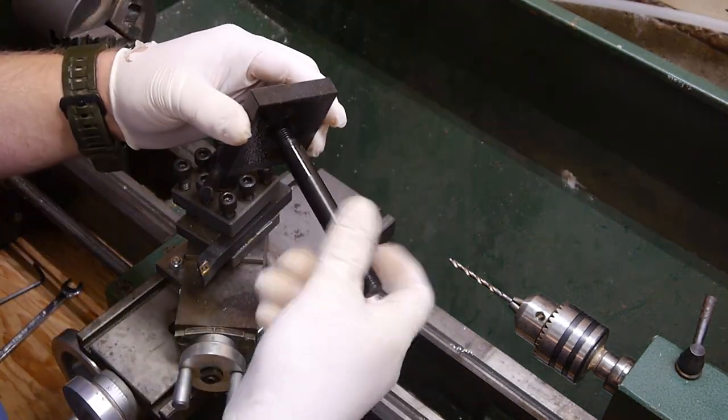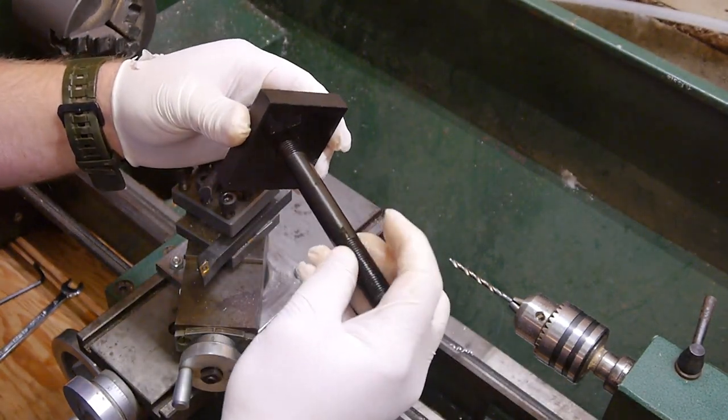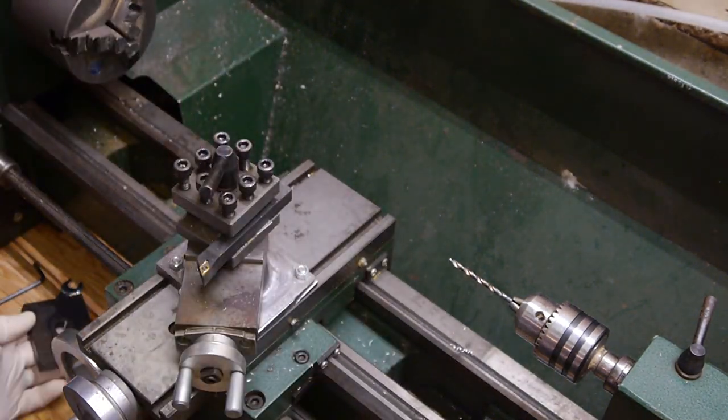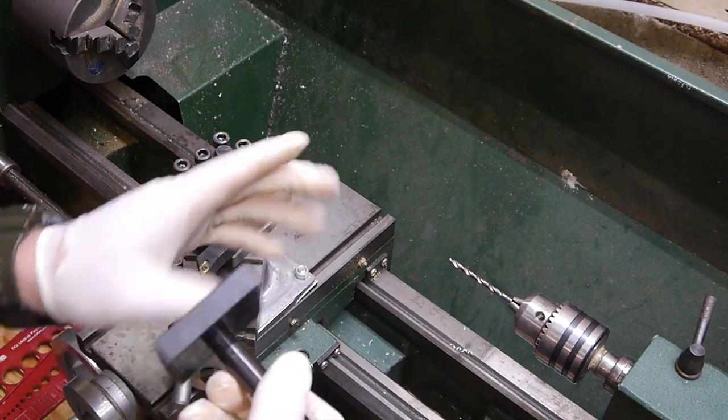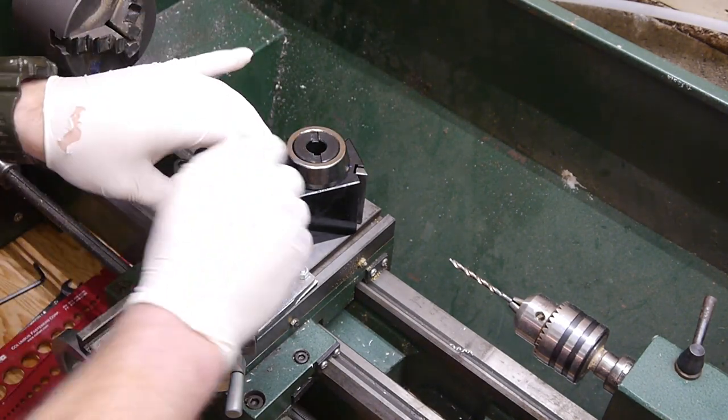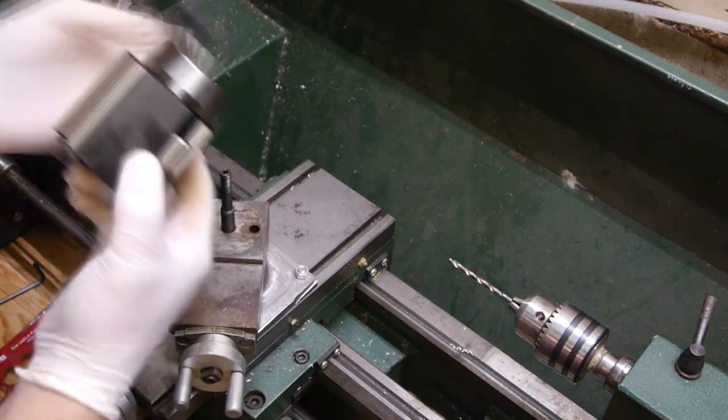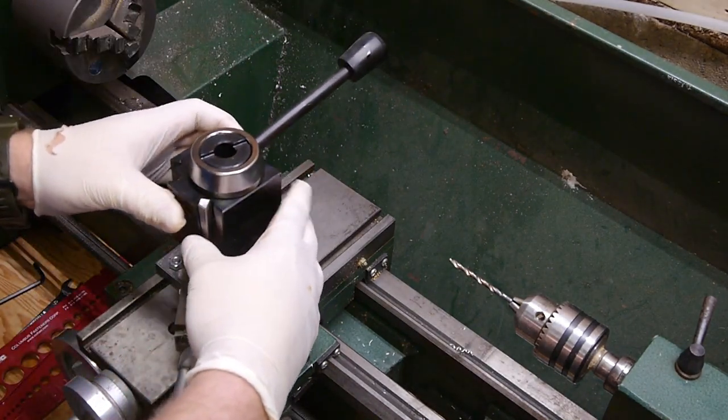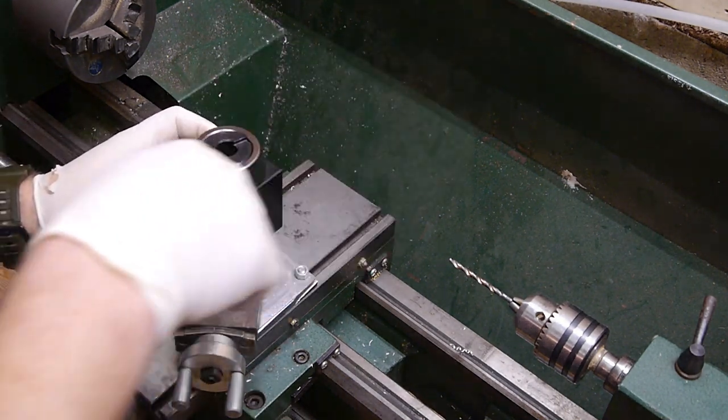That just threads in there. I wonder what kind of threads these are. Yeah, so M14 by 1.5, coarse threaded. Next thing I gotta think about is height on this thing. I think I took the AXA size, but golly, that seems awfully tall, doesn't it?